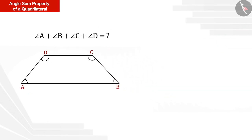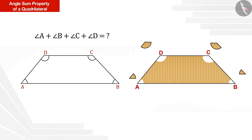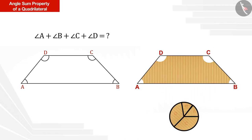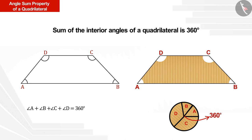Let us take the help of an activity for this. With a piece of cardboard, we make a similar quadrilateral and cut its angles. Then we put the vertices of all these angles at one point, and we can see that they form a circle. We know that the angle formed at the center of the circle is 360 degrees. Therefore, based on this activity, we can say that the sum of interior angles of a quadrilateral is 360 degrees.